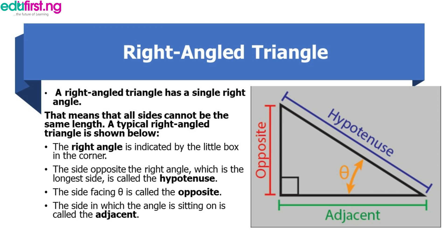We know that a right angle triangle has a single right angle, which means that all sides cannot be of the same length. Looking at this diagram, we can see a little box at the corner. It is this little box that tells us that this particular triangle is a right angle triangle.